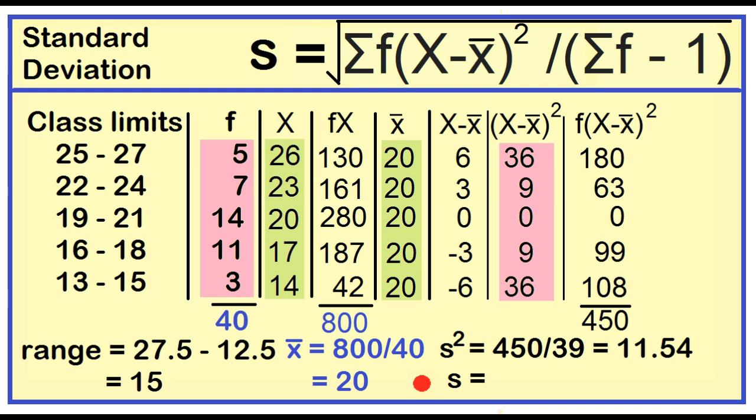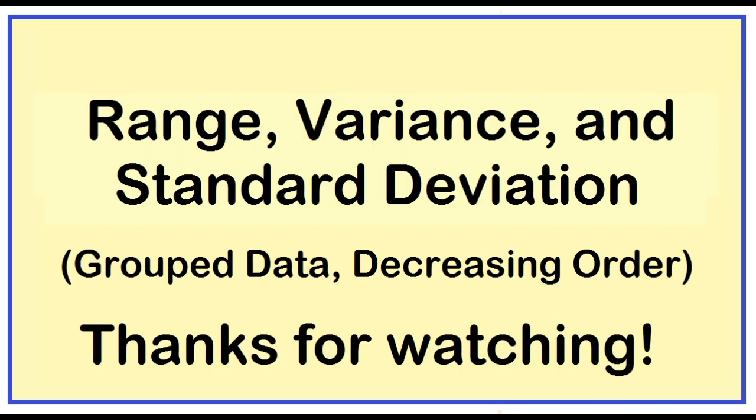The standard deviation is just the square root of the variance. The square root of 11.54 is equal to 3.40.